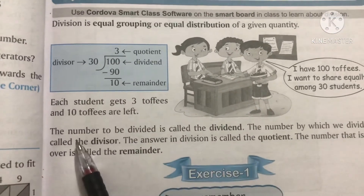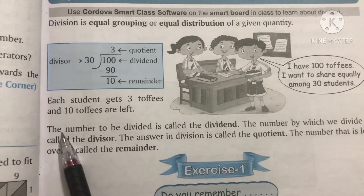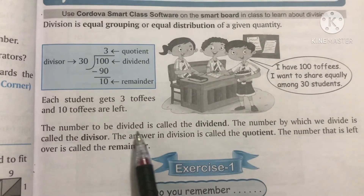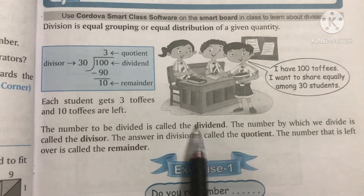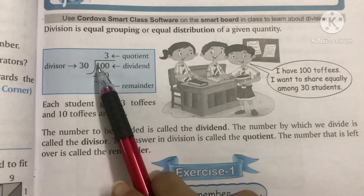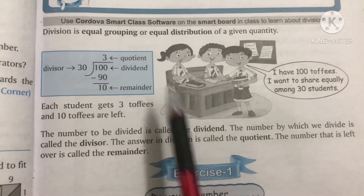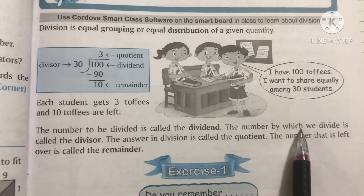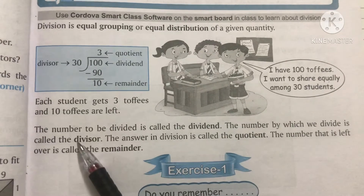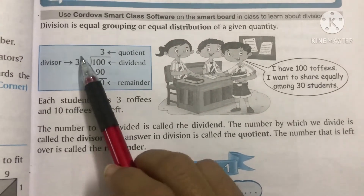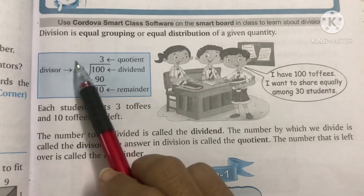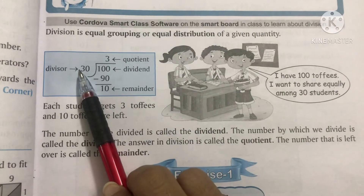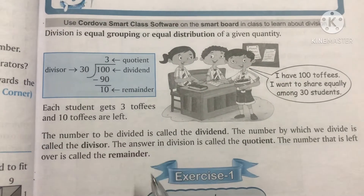Now, this is written: the number to be divided is called dividend, so here 100 is the dividend. The number by which we divide is called divisor. We are dividing 100 with 30, so 30 is the divisor here.